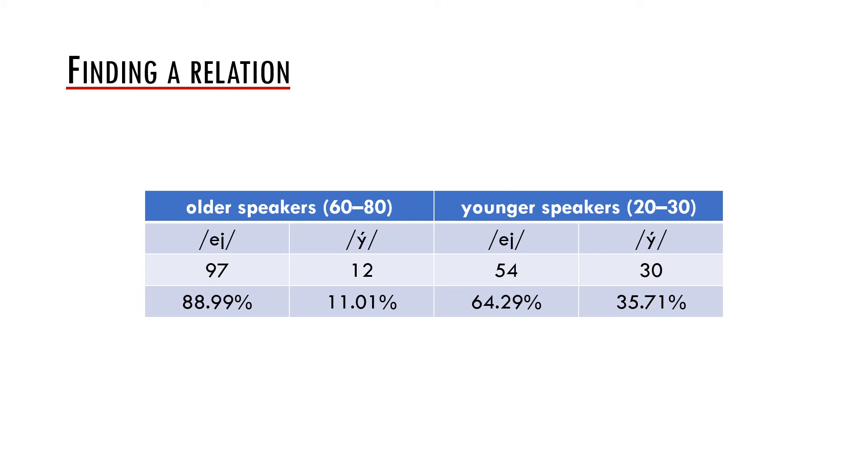From this made-up table, it seems that the older speakers use a variant to a higher extent than the younger speakers. The difference between 88.99% and 64.29% seems to be very high even on the first glimpse. If these results were real, they would point out to a possible ongoing language change.